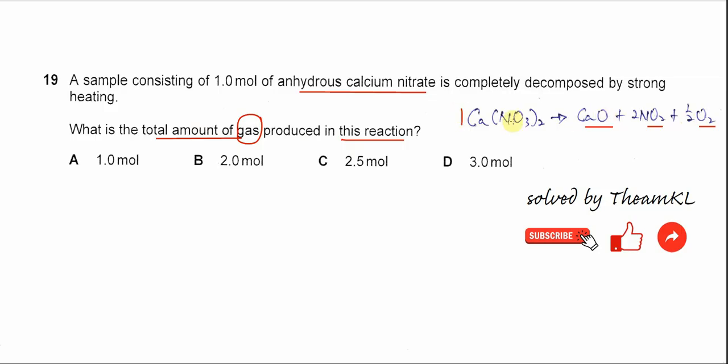One mole of calcium nitrate will produce two moles of NO2 and half moles of O2, and they are both gases. So 2 plus 0.5, we get 2.5. That's all, thank you.